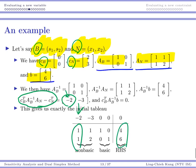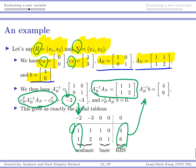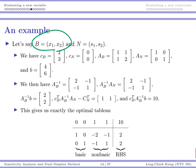Once the entering variable is identified, we look at Ab⁻¹b for the right-hand side values and the entering column from Ab⁻¹An. We perform the ratio test to find the leaving variable, then switch to a new basic set and form a new tableau. We check the reduced costs again, perform the ratio test again, and continue iterating from basis to basis until we reach the optimal tableau.